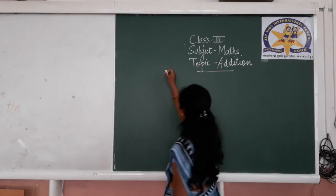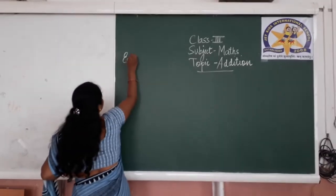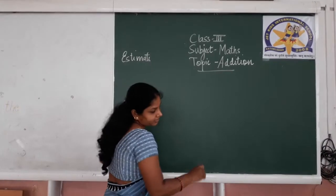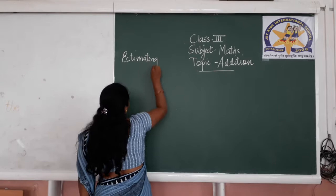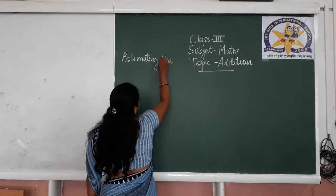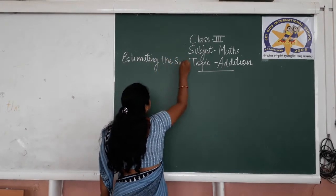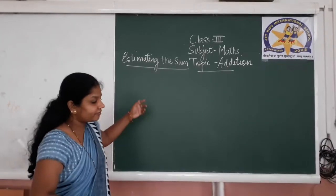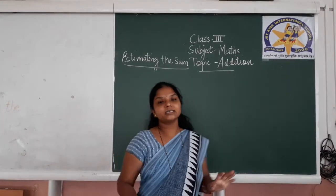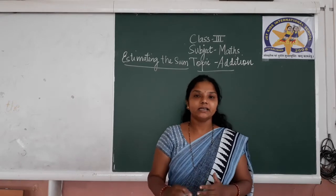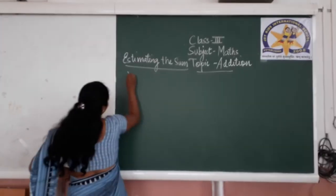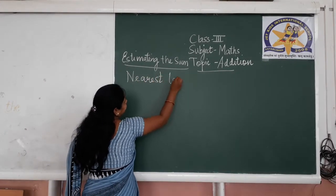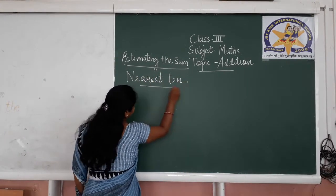Today's topic is estimating the sum. Now, when you have to round up the numbers to the nearest 10, I will give you a simple trick. If we are rounding up to the nearest 10, here is what you do.